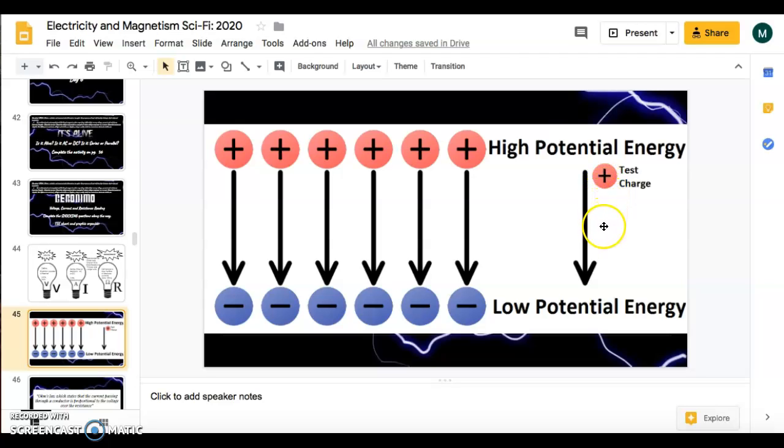Well, the further it gets away, it decreases in that potential energy, kind of like your bow and arrow. The further you pull it back, the more potential that it has. I think your reading gave the example of a waterfall, the higher the water is up, the greater the potential. The further it falls, it lessens its potential energy. The same thing here.